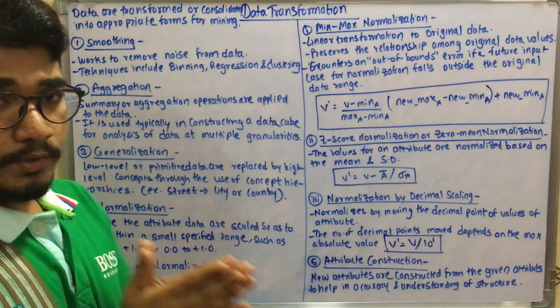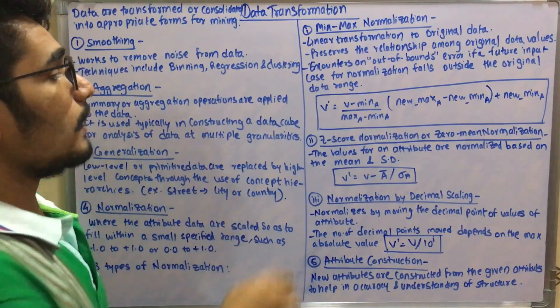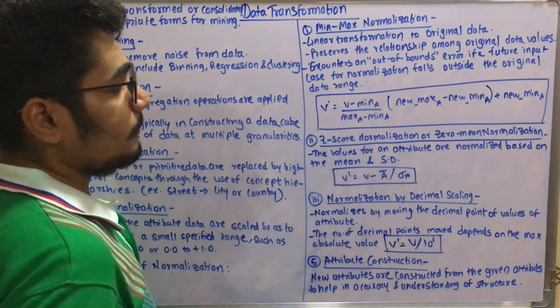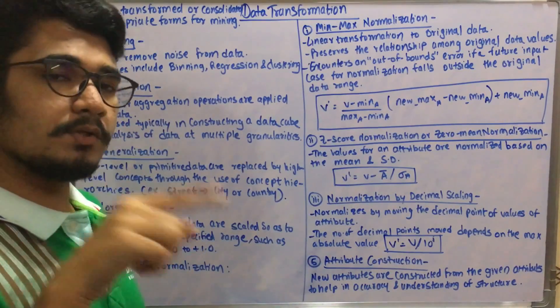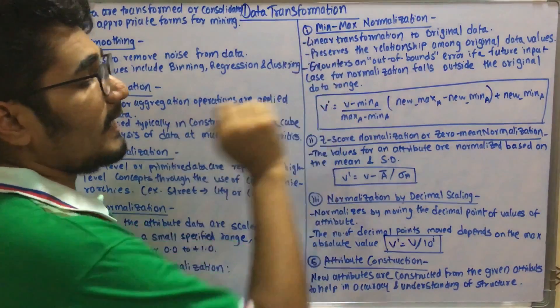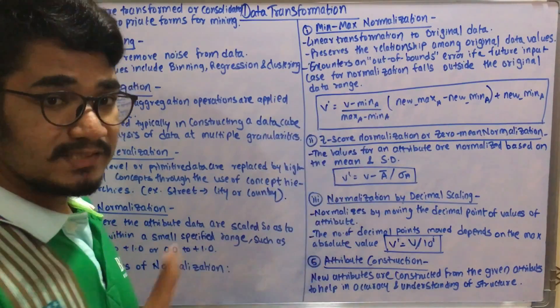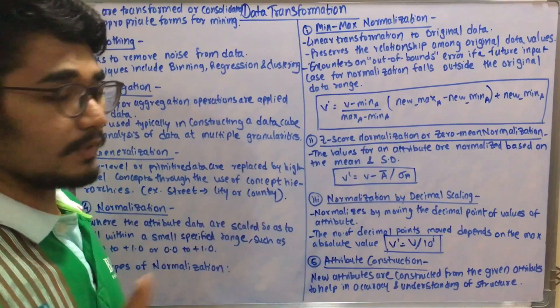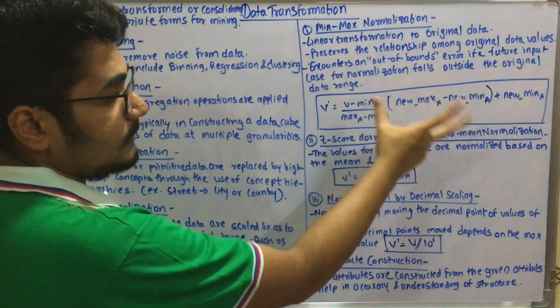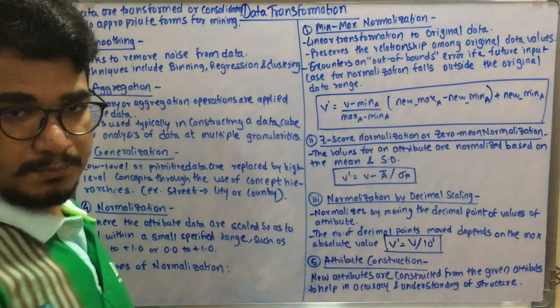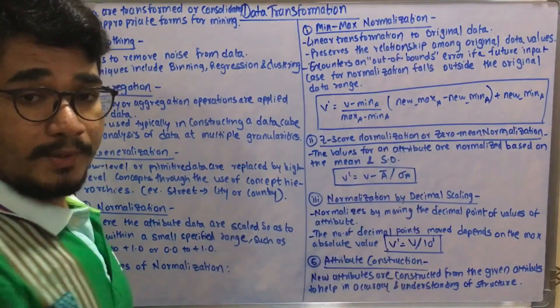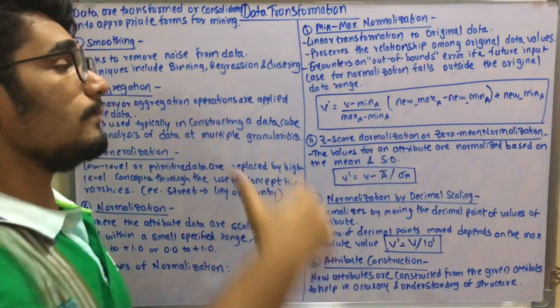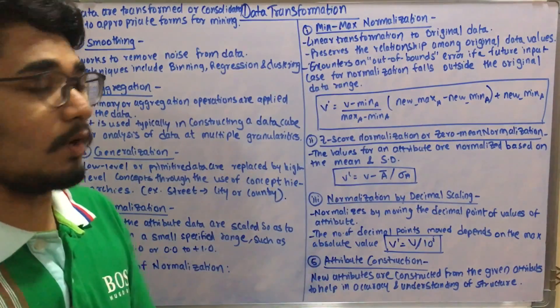In order to determine this we have a mathematical formula. V dash represents the normalized value for the attribute A. The formula is: V dash equals (V minus minimum value of A) divided by (maximum value of A minus minimum value of A), multiplied by (new maximum of A minus new minimum of A), plus new minimum value of A. This equation, while solving the problem, you have to input it as it is, else you will get the answer wrong.